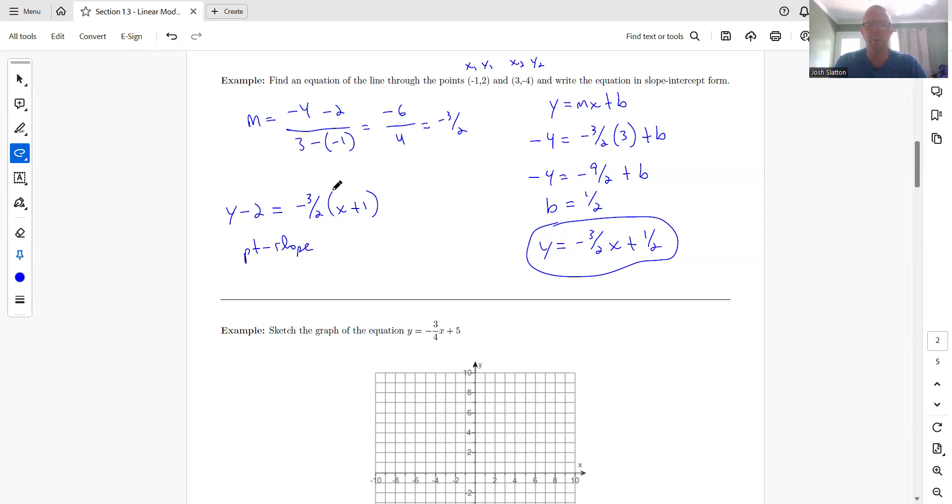So normally, if you find one of these first, you're going to find the point-slope first. And then you can go to this one. Or you can just plug in a point with the slope, solve for b. And there's your y-intercept. So either way, I don't think either way is necessarily that much better. It just kind of depends on which way you prefer, I guess.